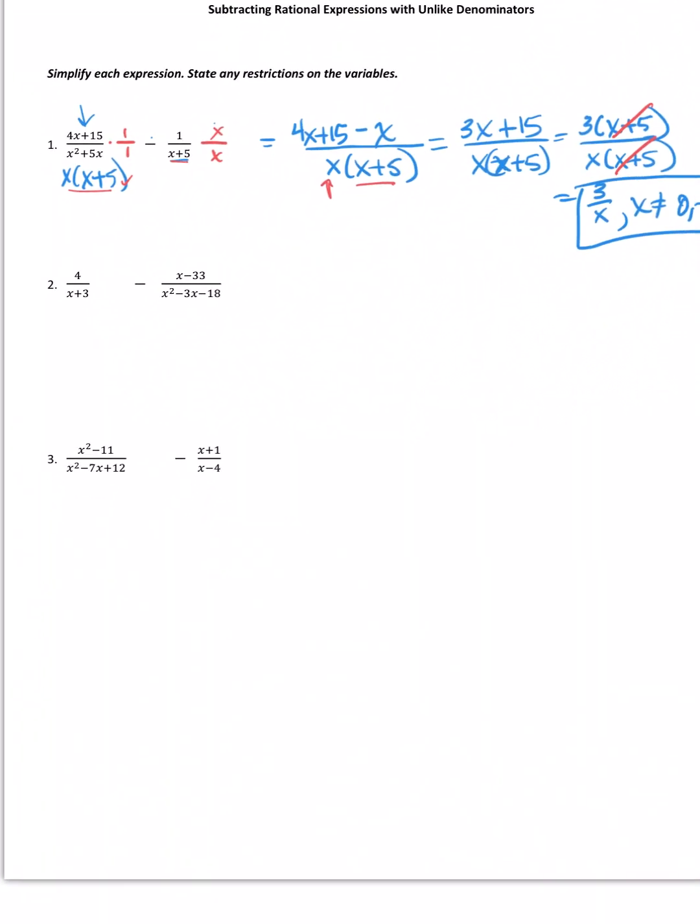Number 2. 4 over x plus 3 minus x minus 3 over x squared minus 3x minus 18. Let's do some factoring. Let's rewrite this guy. Two numbers that multiply to negative 18 but add to a negative 3. A 3 and a 6 would work. So, it needs to be a negative 6 and a positive 3.